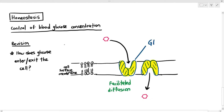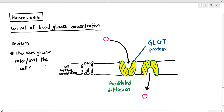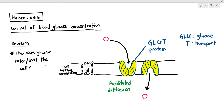You have to add this into your notes now: the name of the carrier protein that transports glucose is known as the GLUT protein. The GLUT protein is a transport protein that moves glucose by facilitated diffusion, because these carrier proteins are very specific to only glucose molecules. That's the first important thing we have to know.